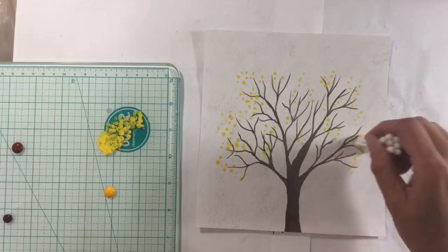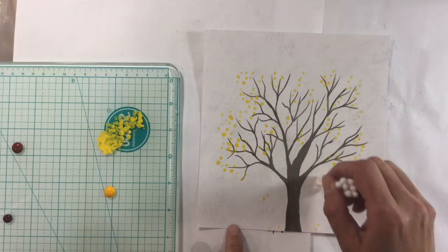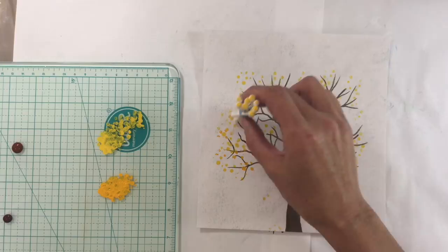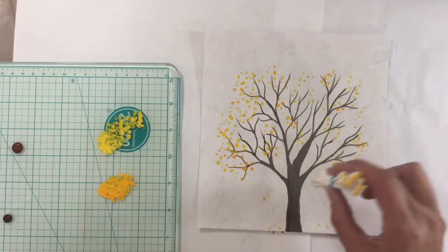And I'm adding it to the trees and some fallen leaves on the ground as well. And then here I'm using the other end of the q-tip now just to add a slightly deeper yellow. And I'm just really pressing lightly with these q-tips as well.